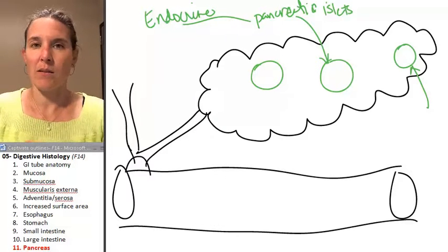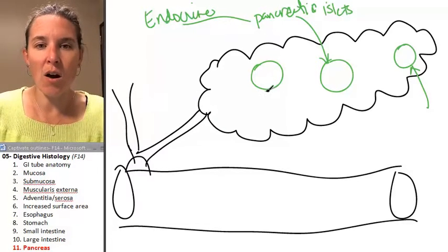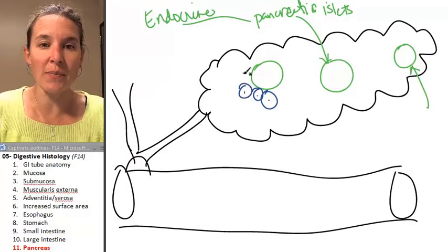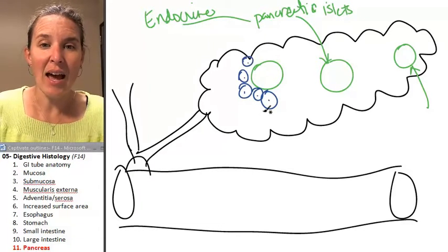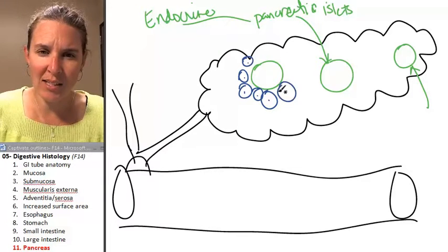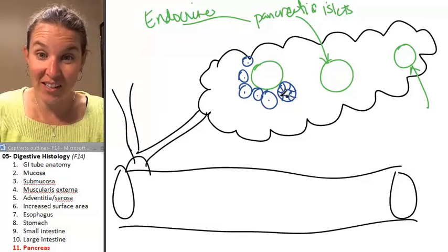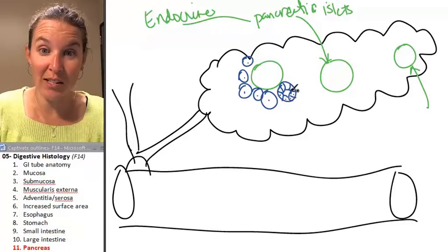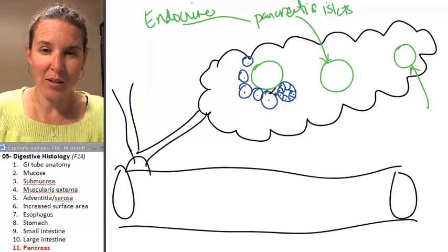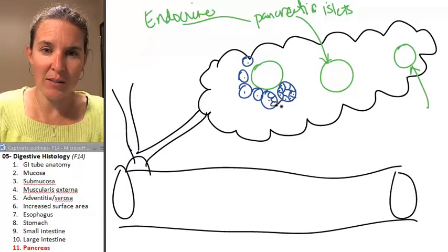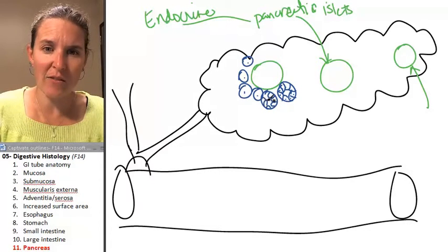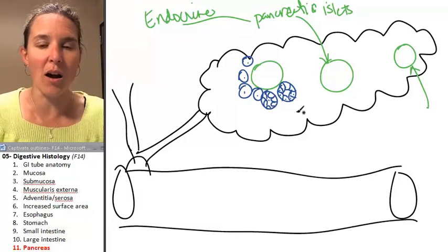Surrounding the pancreatic islets are acinar glandular structures. And these guys, I'm drawing them like this. It's not a single cell. It's actually a gland. It looks really similar to all the other glandular tissue that we've been looking at so far. But I really should have drawn them all like this because these look like individual cells and I am not going to draw them all. But that's what they are.